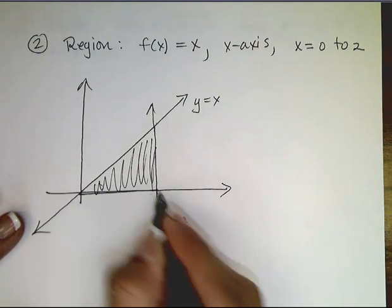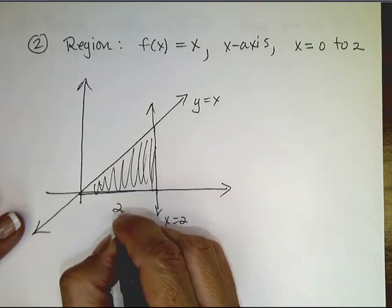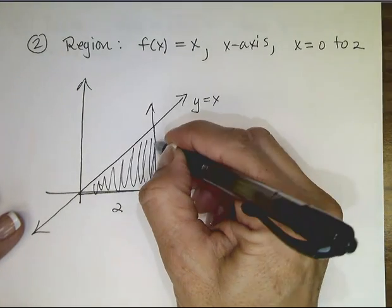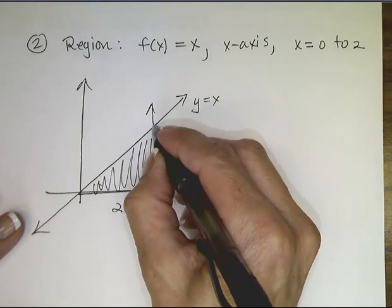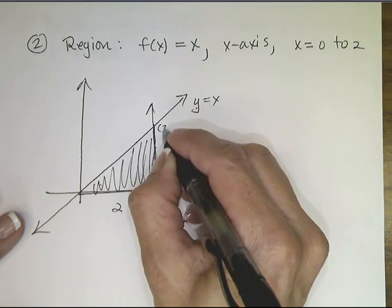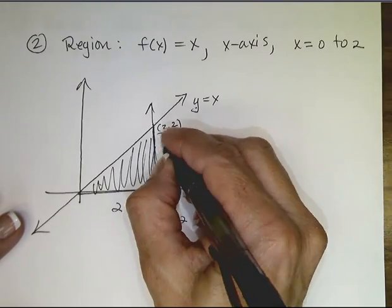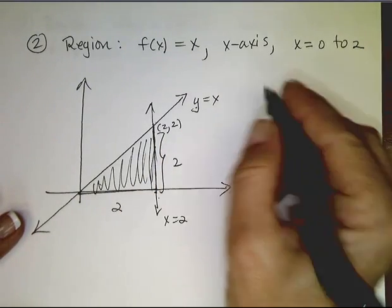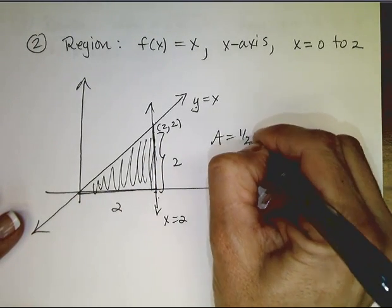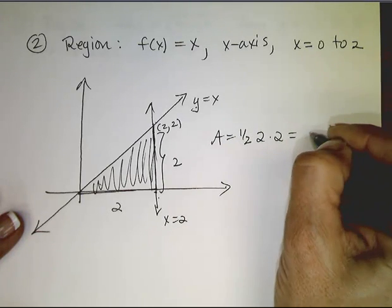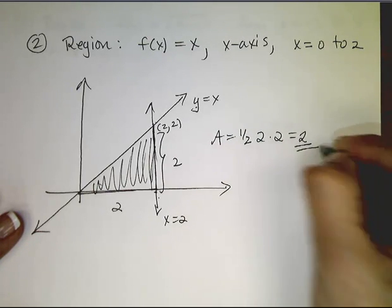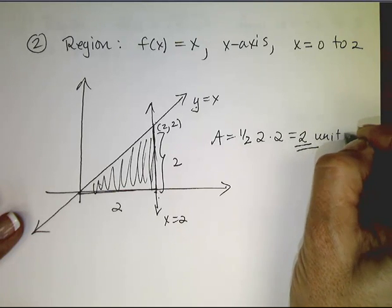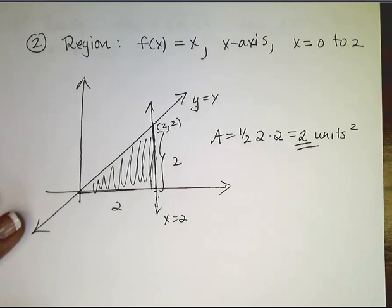I know the base of this triangle has distance 2, and the height of this triangle also has distance 2. And I know that because it intersects the line y equals x. So that should be the point 2, 2. So this distance is 2. And the area of a triangle is 1 half base times height. So it's 1 half of 4 for 2 squared units.